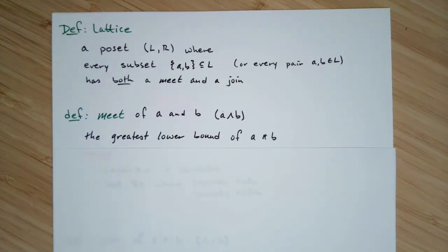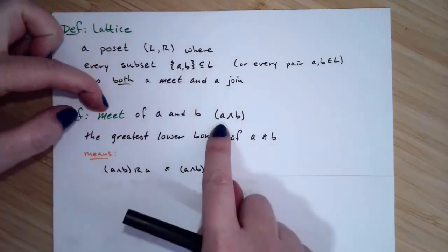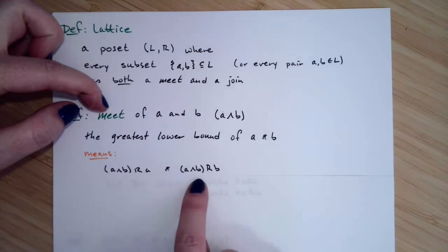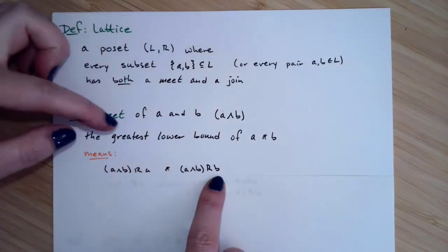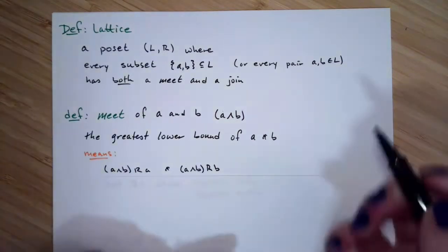In terms of the relation, it means that if you take the meet, so symbolically A meet B, and look at the meet of A and B related to A, the meet is also going to be related to B. So lower bound means it's below A and B in your Hasse diagram.